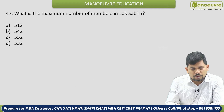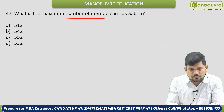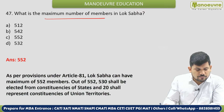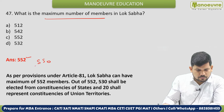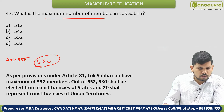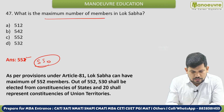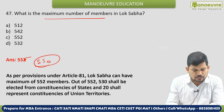Next: What is the maximum number of members in Lok Sabha? As per the Constitution, under Article 81, Lok Sabha can have a maximum of 552 members — out of 552, 530 shall be elected from states and 20 shall represent union territories. Note: the Anglo-Indian post has been removed, so the number has changed to 552.